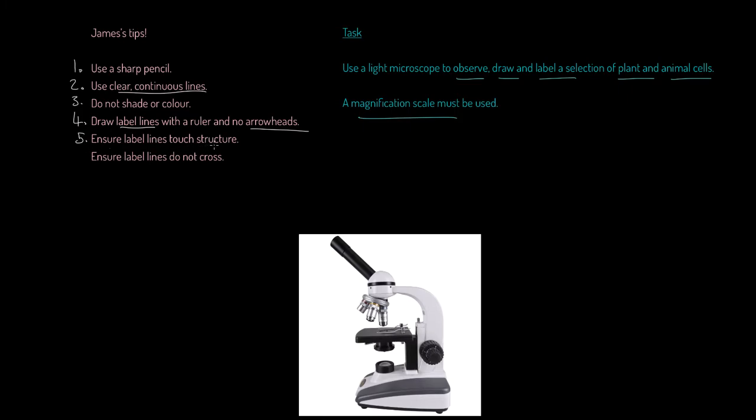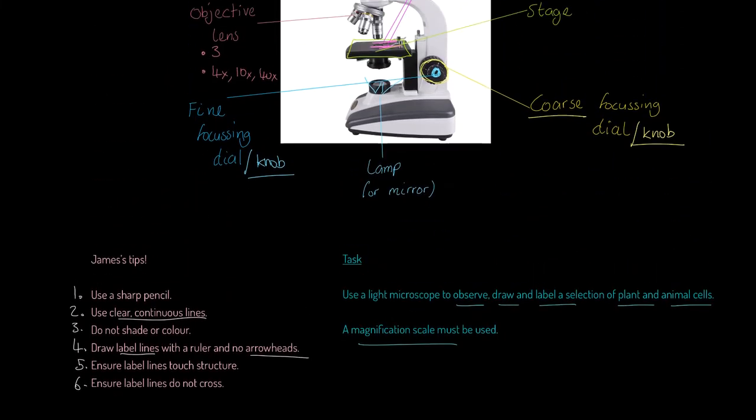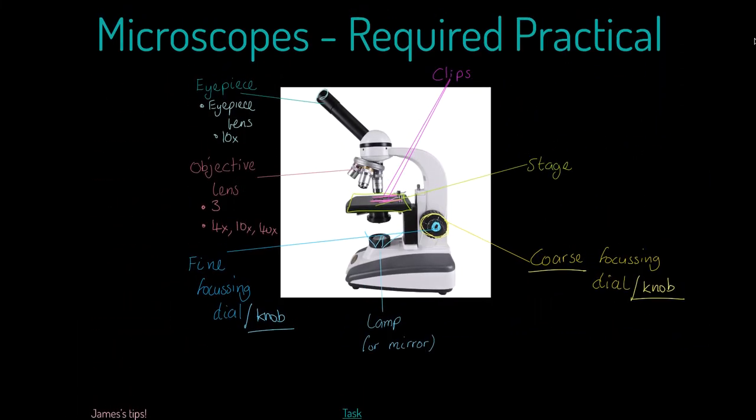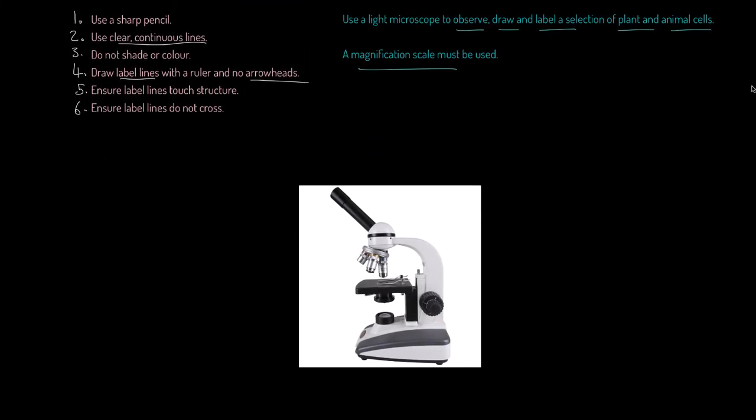Fifthly, ensure label lines touch the structure. So, whatever it is you're labeling, make sure that the line actually touches that thing. And sixthly, ensure that label lines do not cross. Now, I've already broken one of these. I wonder if you know which one it is. But those are the tips we're going to follow. Now, what is the process we are going to follow? Let's go through it.